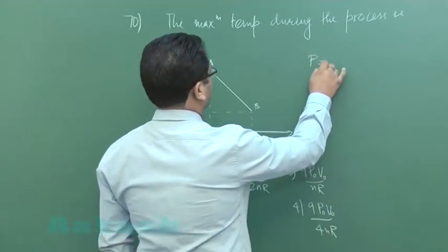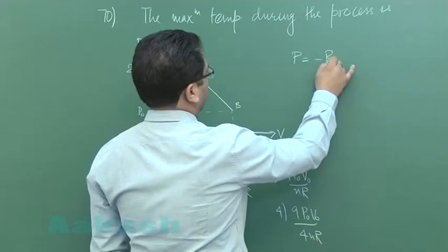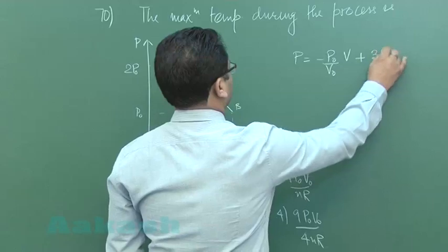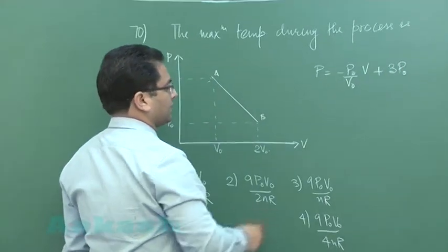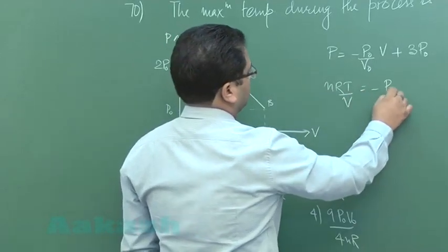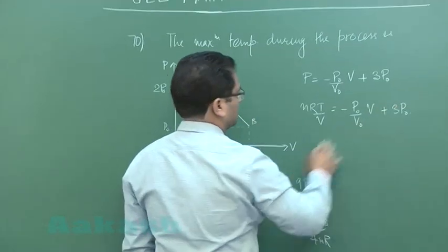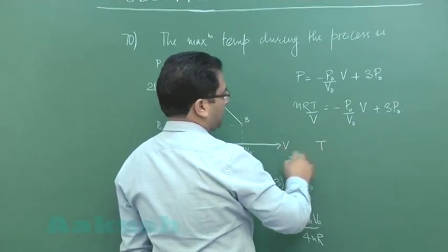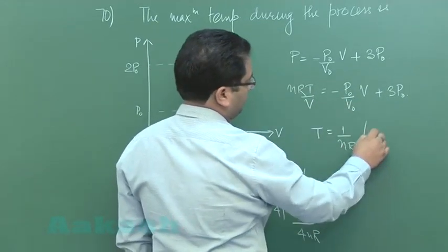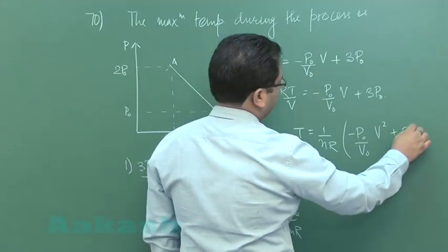During that process we require to calculate the maximum temperature. Let's be mathematical. The pressure would be P equals minus P_naught by V_naught into V plus C. That's minus P_naught by V_naught into V plus 3P_naught. This would give me nRT by V, where n is the number of moles.